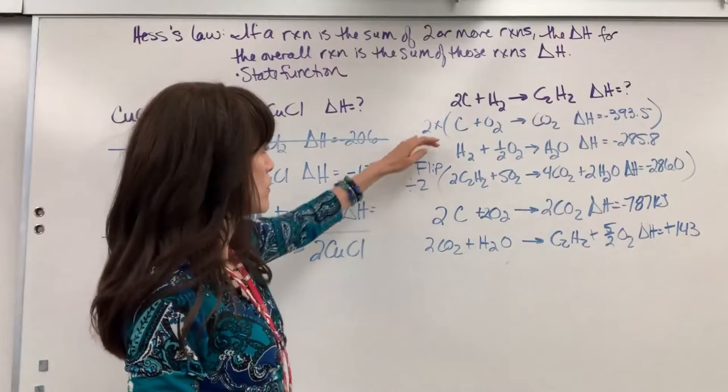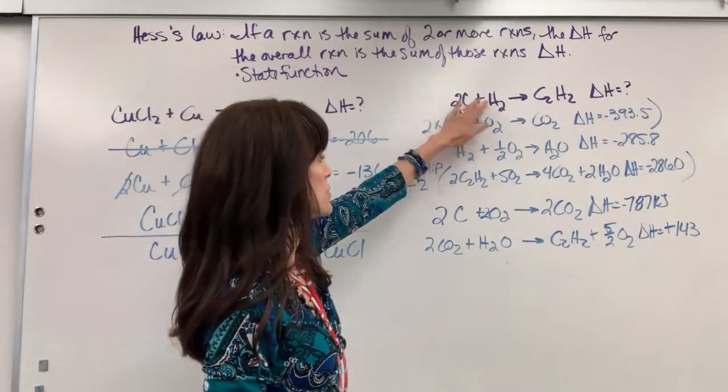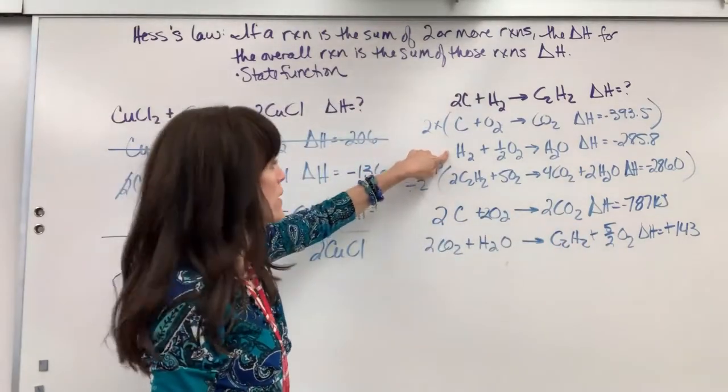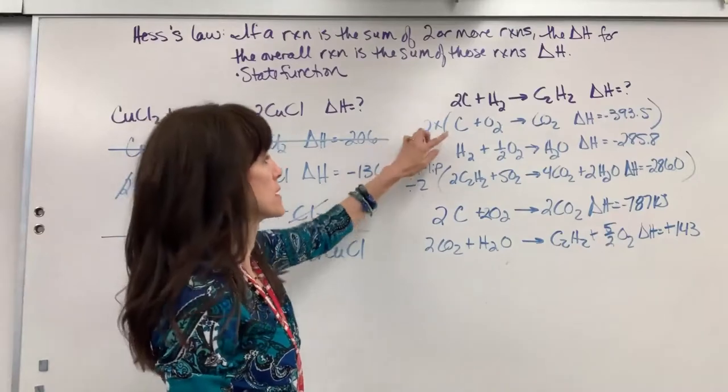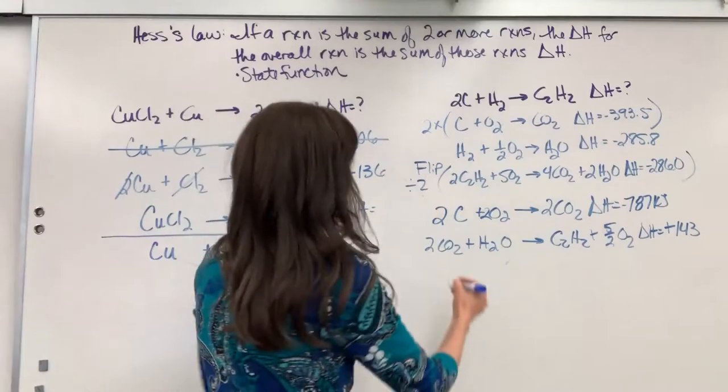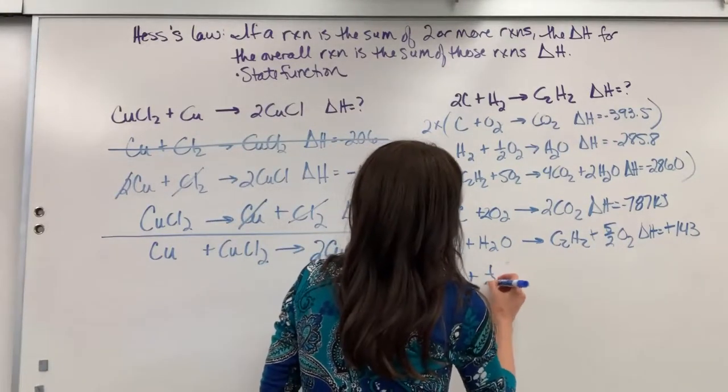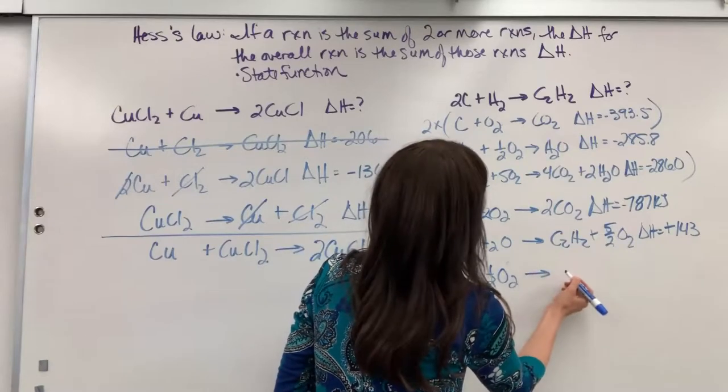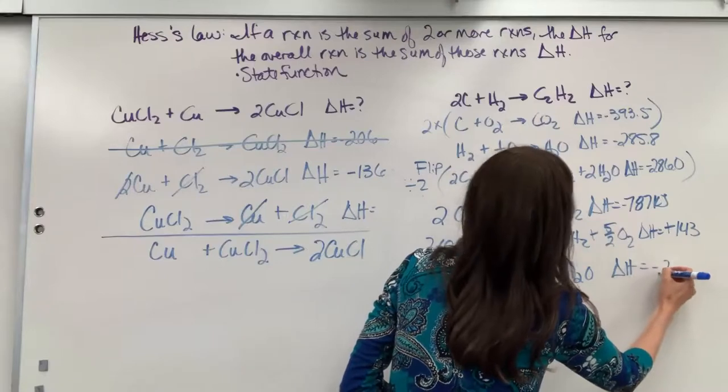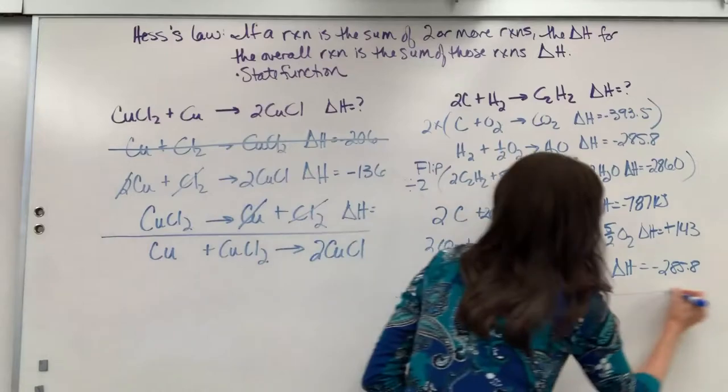Now I have one more reaction right here. And I'm looking for this H2. There's the H2 and I don't see H2 anywhere else in here. That is perfect. Reactant side, reactant side, one mole, one mole. So I'm going to leave that one as is. We will have H2 plus one half O2 yield H2O. And our delta H for this is negative 285.8 kilojoules.